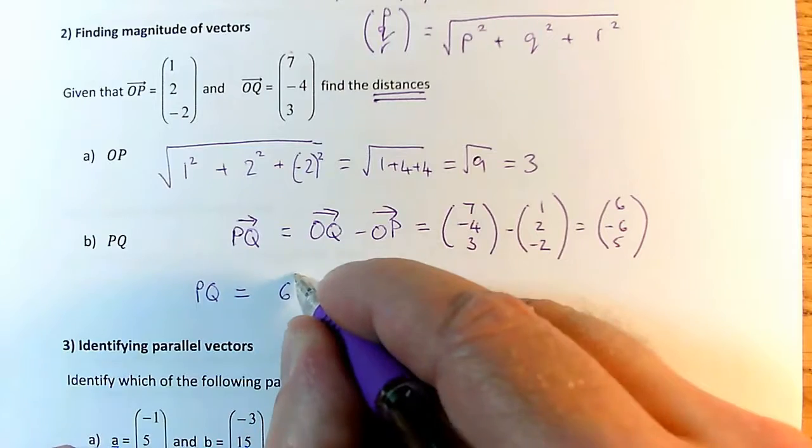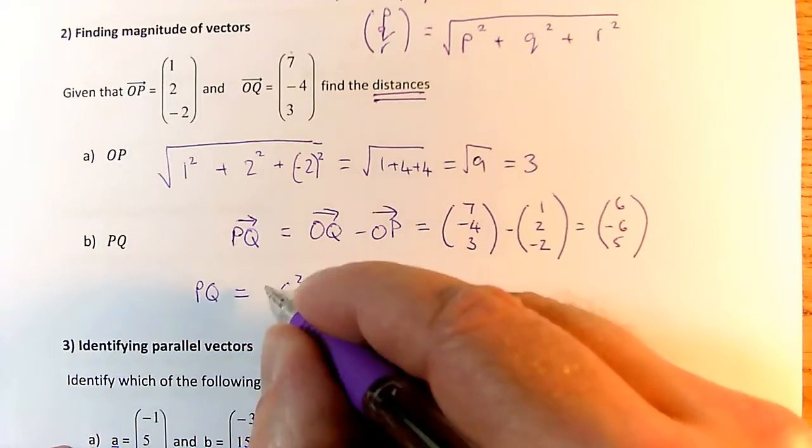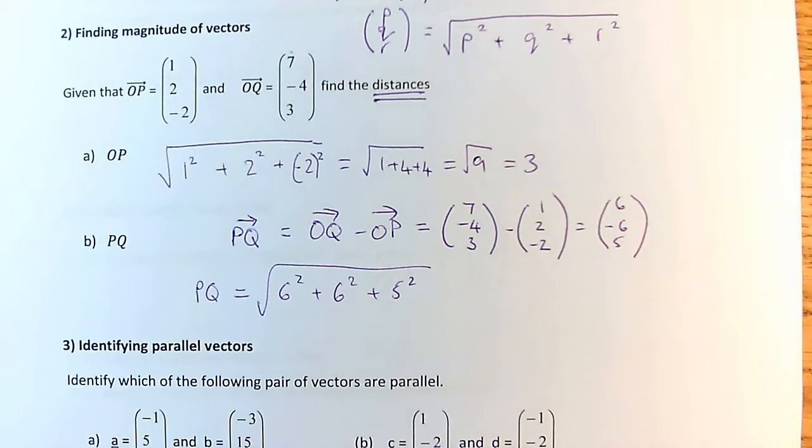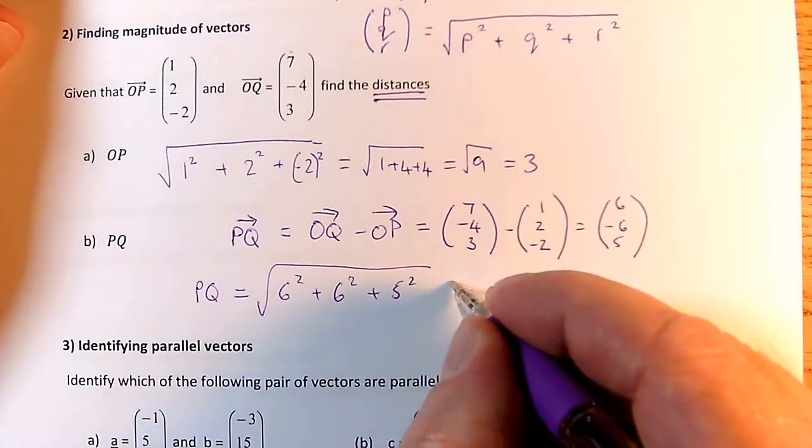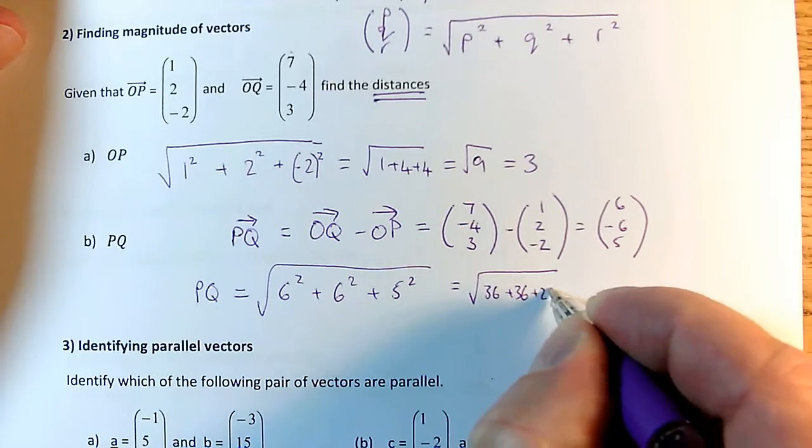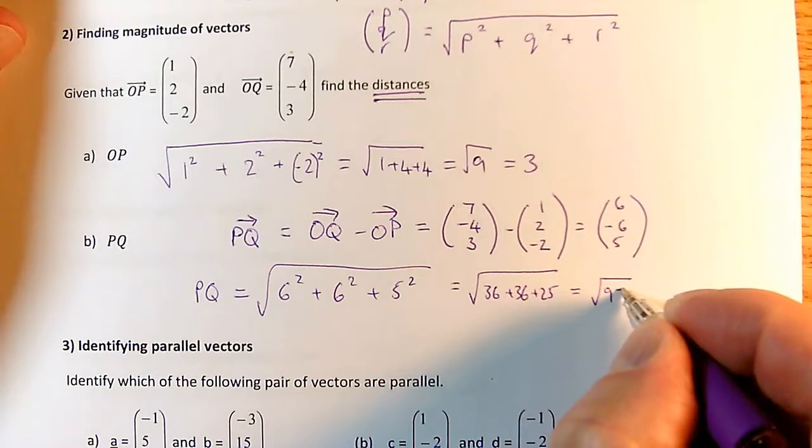OK, so I have to do 6 squared plus minus 6 squared plus 5 squared. And this time, I'm not going to bother putting the minus on this middle 6 because minus 6 is the same as 6 when I square them. I get 36 both times. So this is going to be the square root of 36 plus 36 plus 25, which is 72 plus 25, which is the square root of 97.